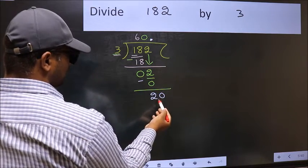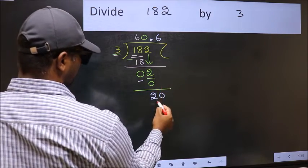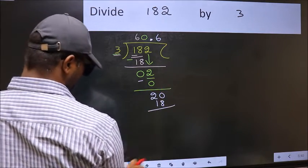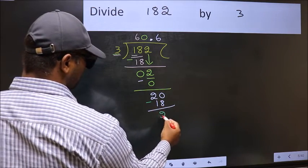So, 20. A number close to 20 in the 3 table is 3, 6, 18. Now, you should subtract. 20 minus 18, 2.